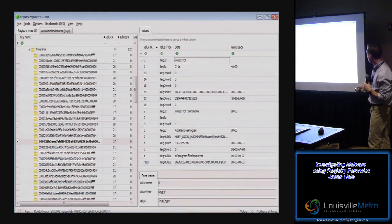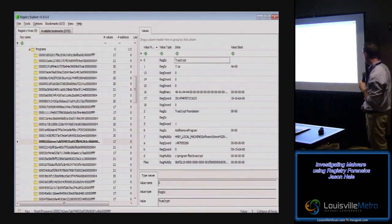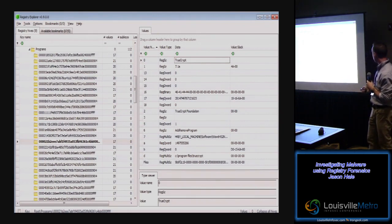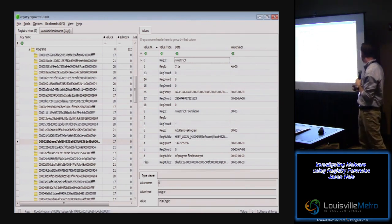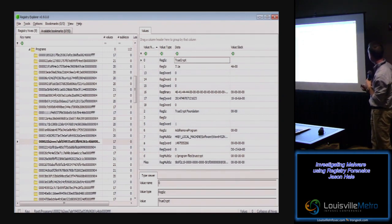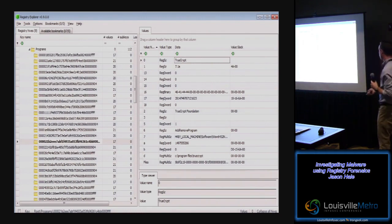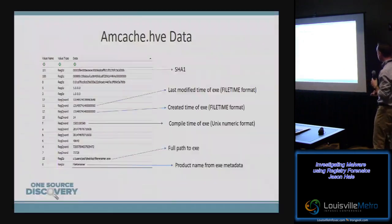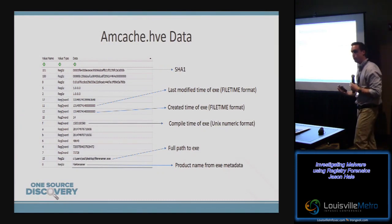If you look at this in Registry Explorer, you can see there's a programs key with a bunch of subkeys that appear to be randomly named. Within each subkey, you have quite a bit of information about a particular program — in this case, a TrueCrypt version. The value names are 0, 1, 1, 3, 14 — not exactly descriptive. By looking at the data we can tell maybe this is the product name, maybe the version, but some of it we don't know what it is without documentation.